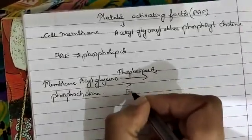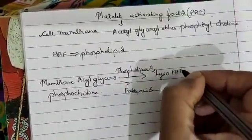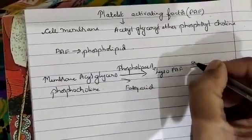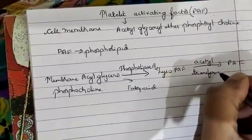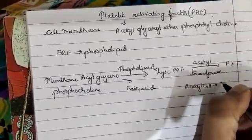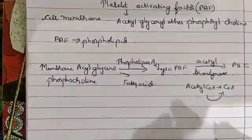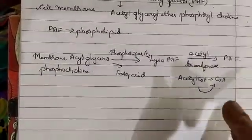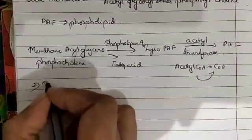In the presence of phospholipase A2 and fatty acid, acyl glycerophosphoryl choline forms lyso-platelet activating factor. Finally, it forms platelet activating factor in the presence of acetyl transferase enzyme, by converting acetyl-CoA to CoA. This is the first step in the synthesis; the second step is the rate-limiting step.